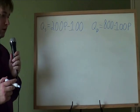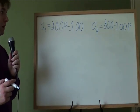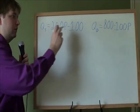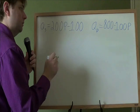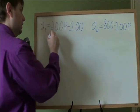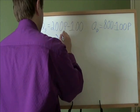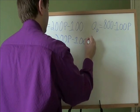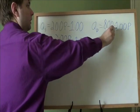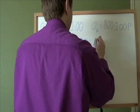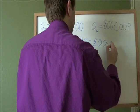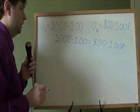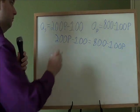Part D, solve for the equilibrium quantity and supply algebraically. So using algebra, you take your quantity supplied and your quantity demanded, and you set them equal to each other. So quantity supplied, that is the 200P minus 100. Quantity demanded, that's this one, 800 minus 100P. And from here, it's just an algebra problem. Solve for P.